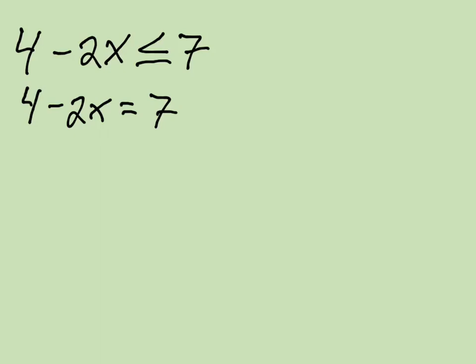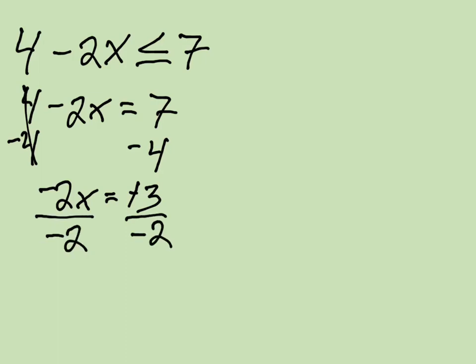Let's take a look at another problem. How about 4 minus 2x is less than or equal to 7. So, now we turn this into an equals and have an equation. And now we subtract 4 from both sides. I divide both sides by negative 2. And I get x equals negative 3 halves.